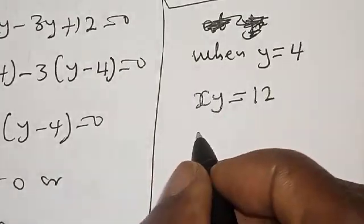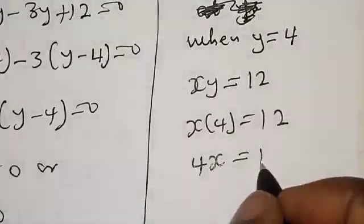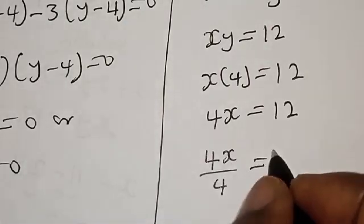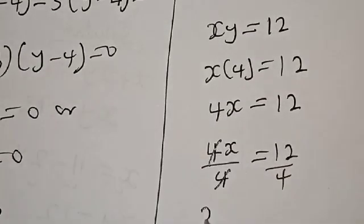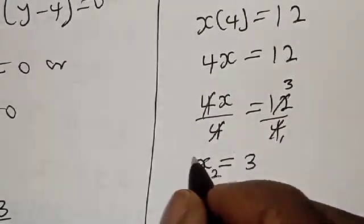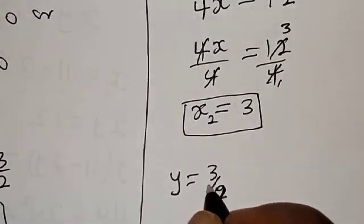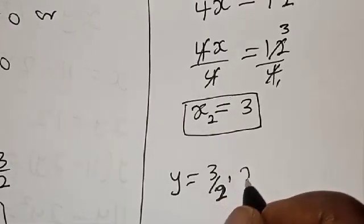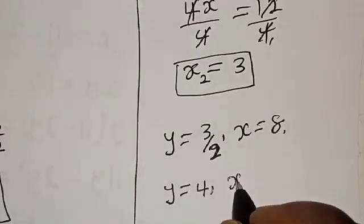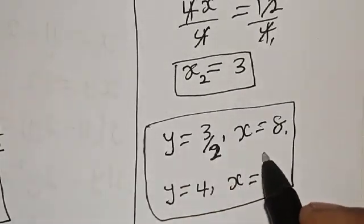When y is equal to 4, we have xy equals 12, so x into 4 is equal to 12. Then 4x equals 12. Dividing both sides by 4, x is equal to 3. Let's call this x₂. Therefore our final answers are: when y equals 3 over 2, x equals 8; and when y equals 4, x equals 3. If you enjoyed the class, please don't forget to like, share, comment and subscribe. Thank you.